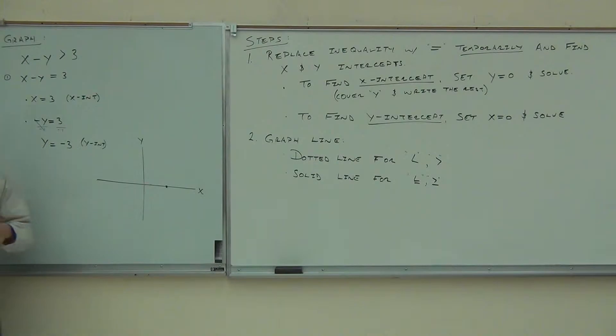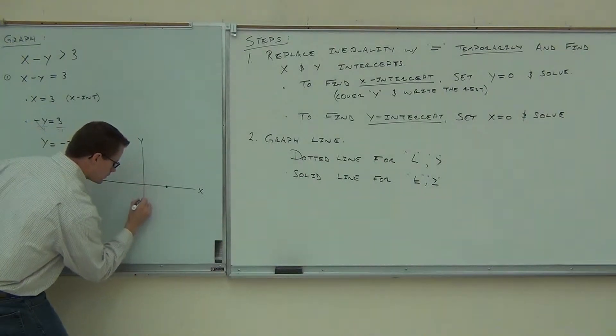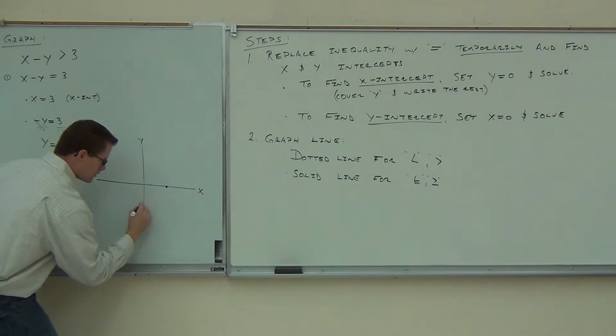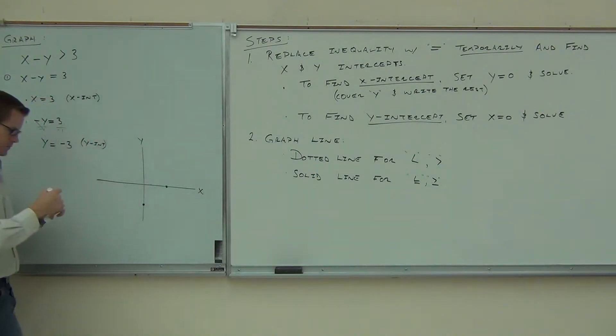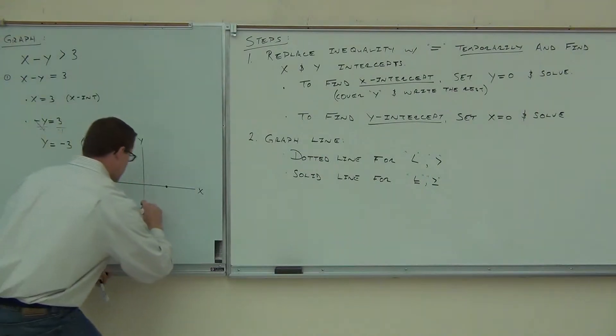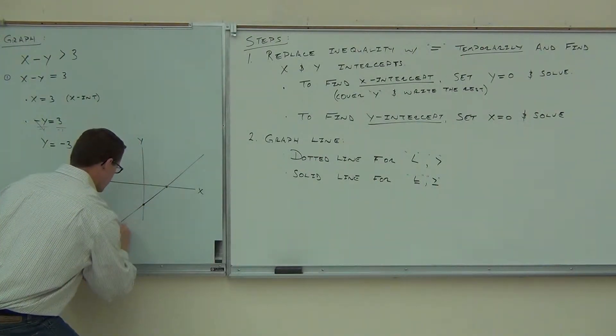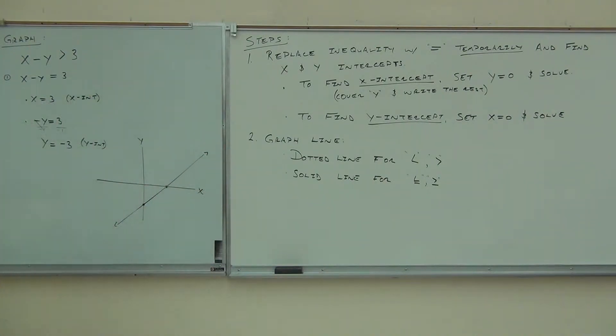y equals negative 3. That's our other intercept. Where are we going to go for y equals negative 3? 1, 2, 3. Can you connect it? Let's make a line.